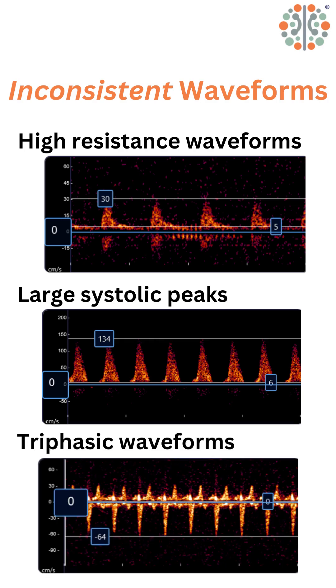Triphasic waveforms, like the one seen here in the basilar artery, can be seen when there is some positive flow during diastole but a brief reversal of flow at that time.